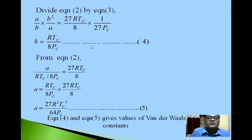Divide equation 2 by equation 3. We get a upon b into b square upon a is equal to 27RTc upon 8 into 1 upon 27Pc. Simplifying this we will get value of b as RTc upon 8Pc. Equation 4.